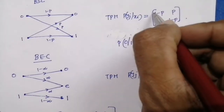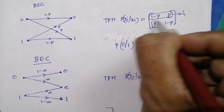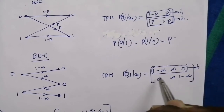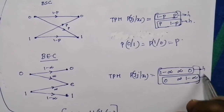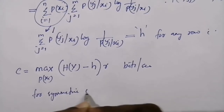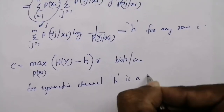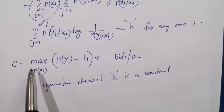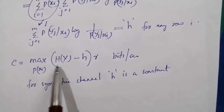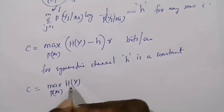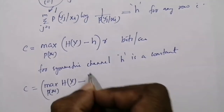For a binary symmetric channel and binary erasure channel, h is the same for every row — it is a constant. So for a symmetric channel, h is a constant. In the expression C = max over p(xi) of [H(Y) - h] times r, both h and r are constants, so we can bring the maximization inside: C equals [max over p(xi) of H(Y)] minus h, times r.